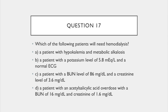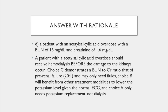Question 17. Which of the following patients will need hemodialysis? A. A patient with hypokalemia and metabolic alkalosis. B. A patient with a potassium level of 5.8 and a normal ECG. C. A patient with a BUN level of 86 and a creatinine level of 3.6. Or D. A patient with acetylsalicylic acid (aspirin) overdose with a BUN of 16 and a creatinine of 1.6. The answer is D. A patient with aspirin overdose should always receive hemodialysis before damage occurs to the kidney. Choice C demonstrates a BUN to creatinine ratio of pre-renal failure and only may need fluids. Choice B will benefit from other treatment modalities to lower the potassium level given the normal ECG. And choice A only needs potassium replacement, not dialysis.